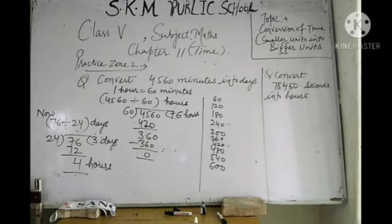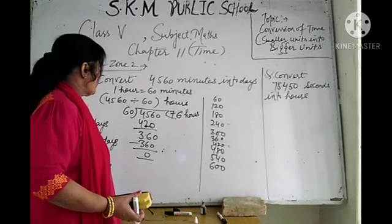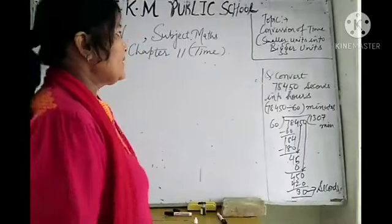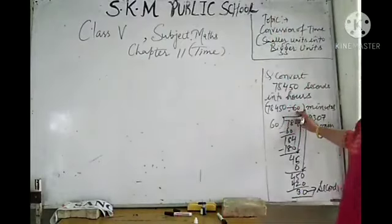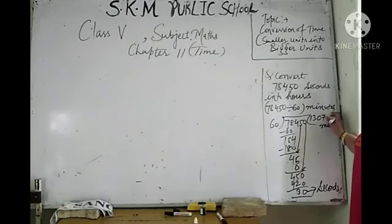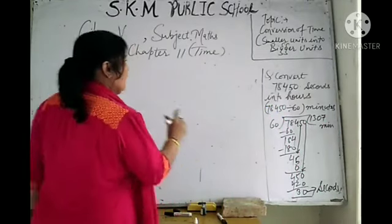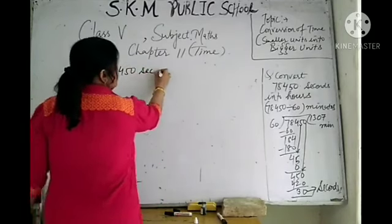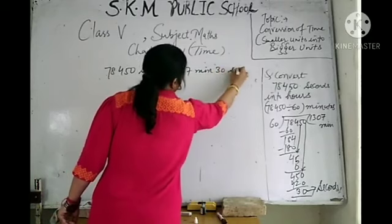You are getting 3 days, 4 hours from the previous question. Now, for 78,450 seconds: first, seconds will be divided by 60 to convert into minutes. By dividing 78,450 by 60, we get 1307 minutes and 30 seconds.